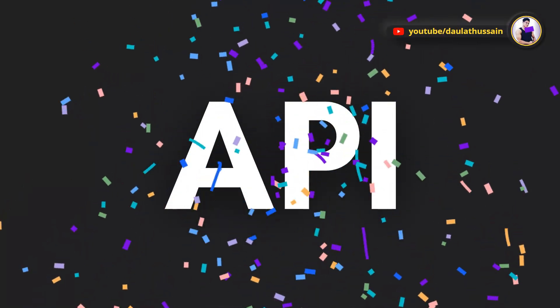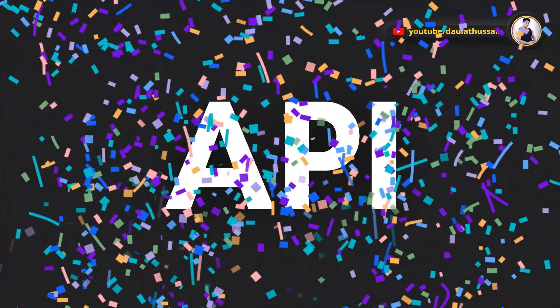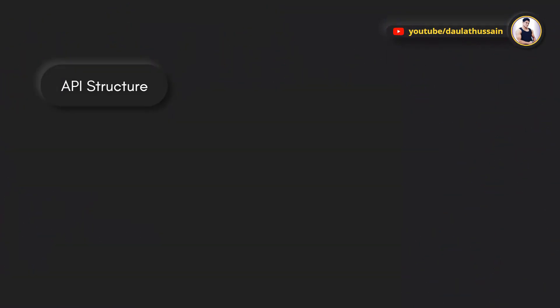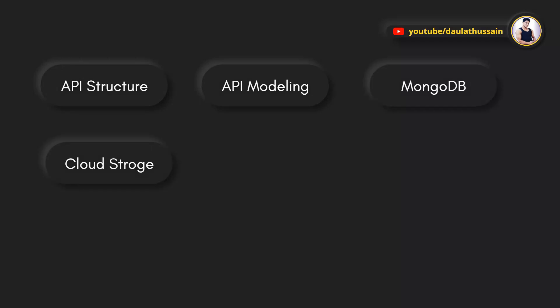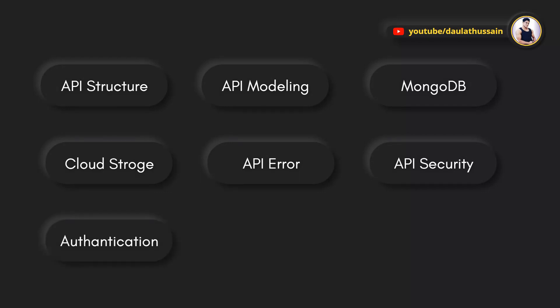We're going to build the API. First we'll start with the architecture, then move to API modeling, then MongoDB, then connect MongoDB with our cloud storage. After that we'll work on API error handling, then API security, then authentications — including user authentication, creating functions to allow users to log in, and handling changes based on whether a user is logged in or not.